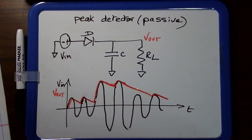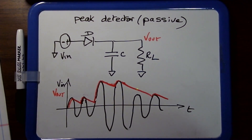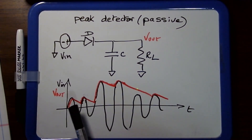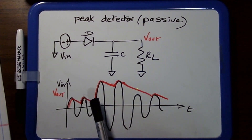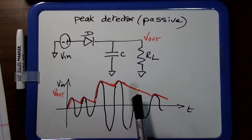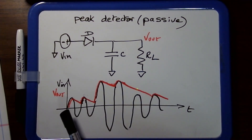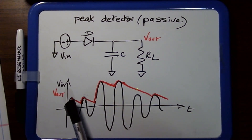Hello, today we're going to talk about peak detectors. I'm going to start with passive peak detectors and then go into active peak detectors. So let's look at what a peak detector is. I'm showing a sine wave that starts with a low amplitude, then I increase the volume and go back down. What the peak detector does is follow the positive slope of the sine wave.